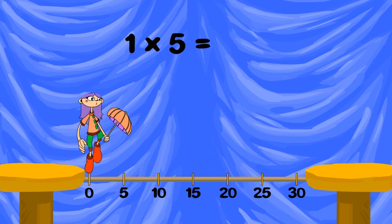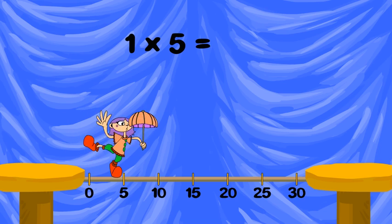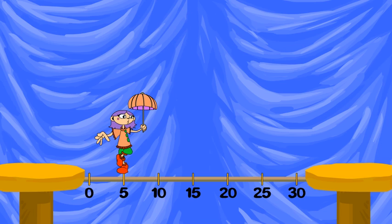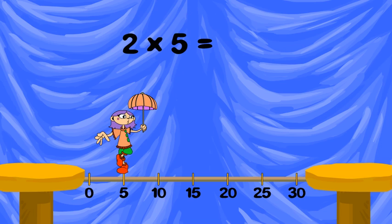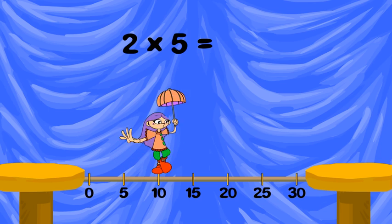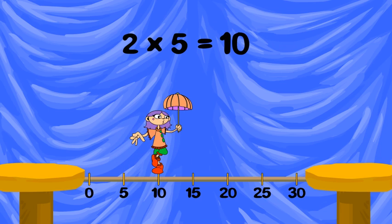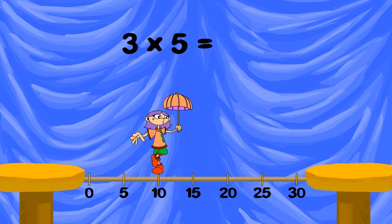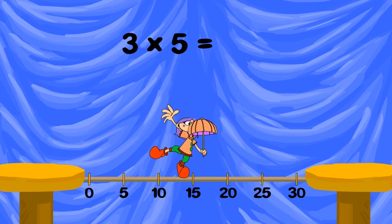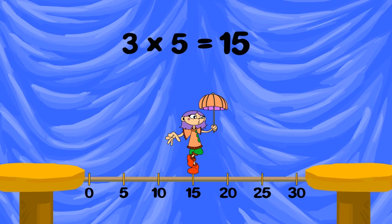Two groups of five is ten. Three groups of five is fifteen. Four groups of five is twenty.